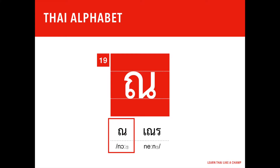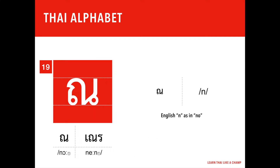The 19th letter of the Thai alphabet is Nå Nên. Nå is the first part, which is the sound it makes as an initial consonant or starting sound. Nå has the first tone. It has an equivalent sound in English which is the English N, like the word Nå.